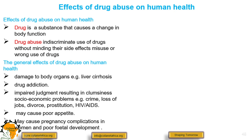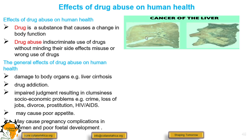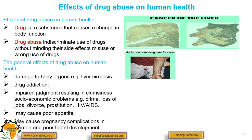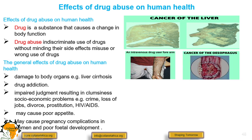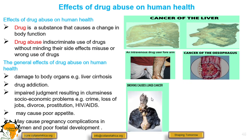Drug abuse may cause pregnancy complications in women and poor fetal development. We can use diagrams to summarize the effects of drugs — you can see a healthy liver and a damaged liver. There is also damage on the skin; people who use hard drugs inject, so the skin is badly damaged. There is cancer of the esophagus due to excessive consumption of alcohol, and lung cancer due to smoking of cigarettes.